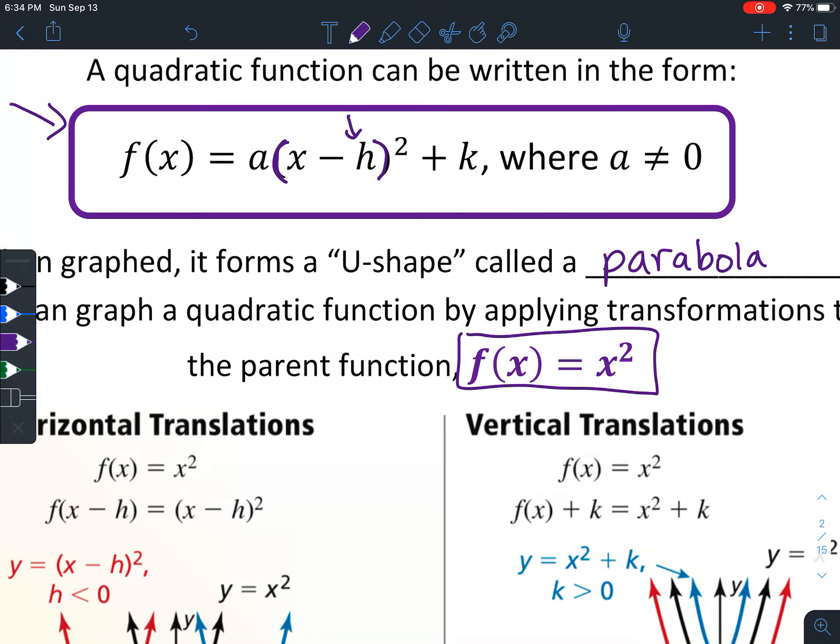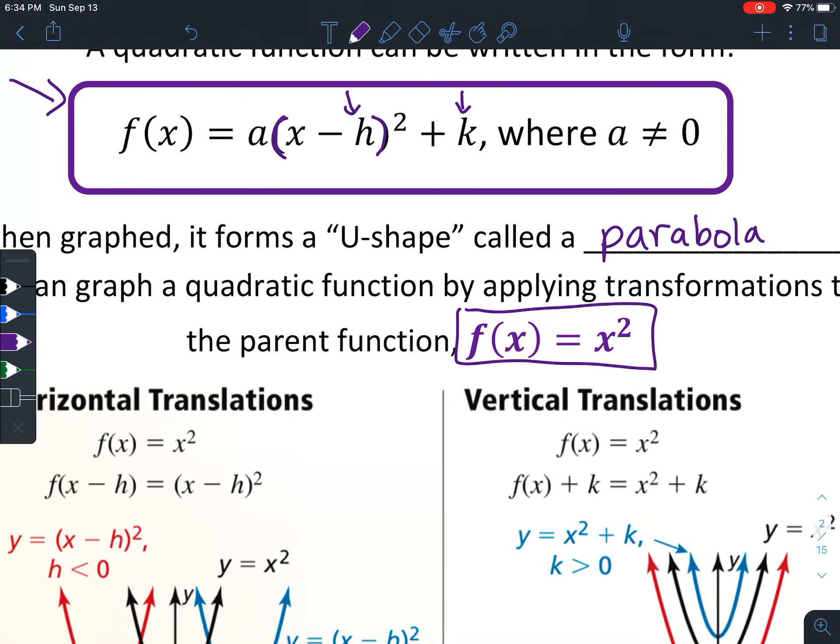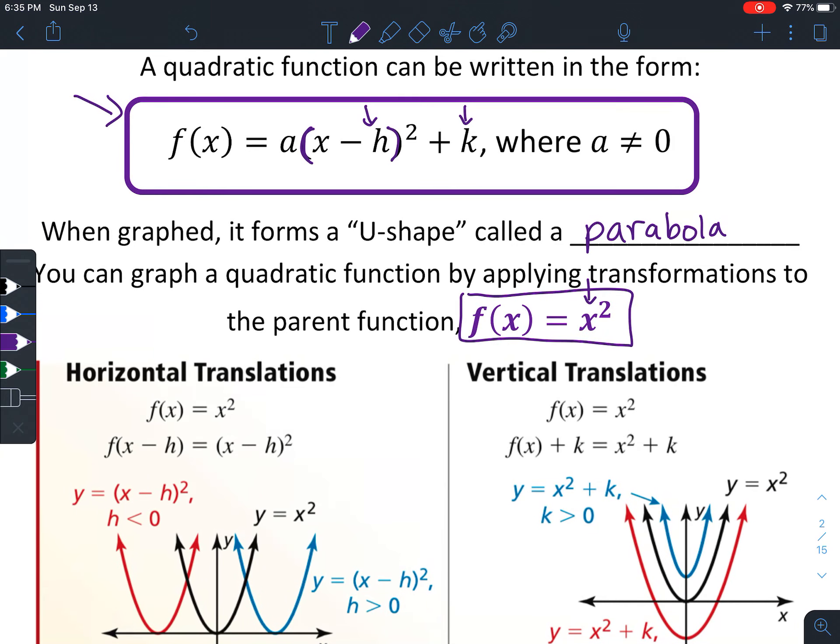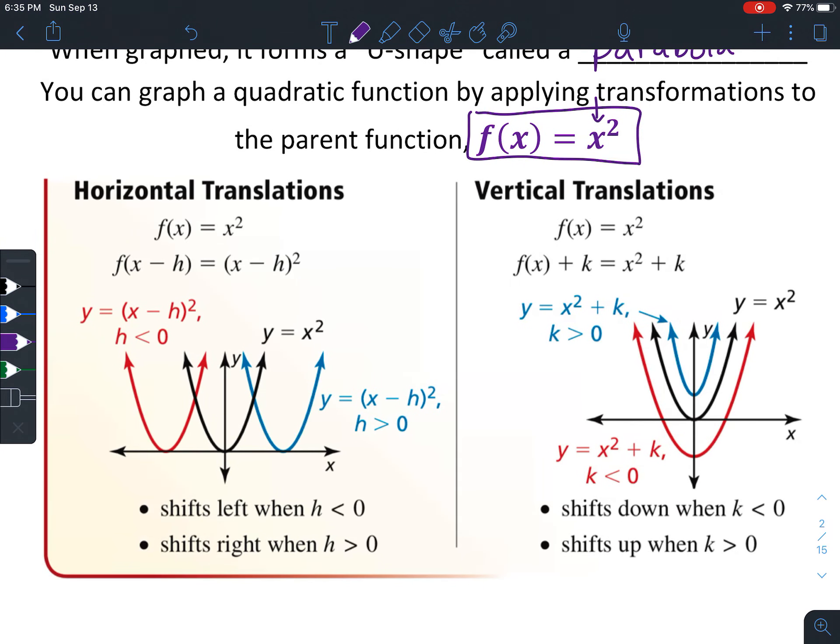You can graph a quadratic function by applying transformations to the parent function f(x) = x². Here's our parent function. You'll notice that in the equation f(x) = a(x - h)² + k, the h is affecting the input, and the k is affecting the output. The input affects the x value, and the output affects the y value. Any change to the x and y changes where the vertex is directly, which is a very important part of graphing it.